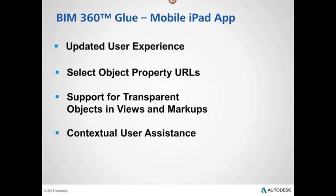Today for our topics of discussion, there are some new features that were released on February 3rd. There's an updated user experience, you can select object property URLs now, there is support for transparent objects in views and markups, and there's a new contextual user assist on the screen.